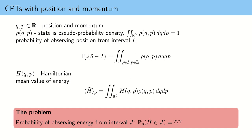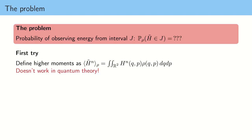Before I tell you how to solve this problem, let me tell you two things that do not work. The first one is to observe that instead of computing probabilities of energy being from some interval, we can also compute higher moments of the energy distribution — something like the mean value of energy to the power of n. These two things are in fact equivalent.